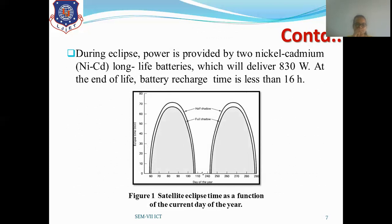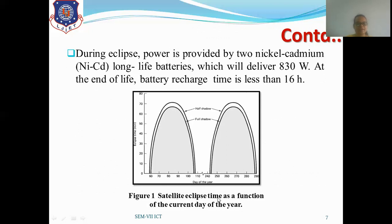As shown in the next figure for the HS 376 satellite, the y-axis shows eclipse time and the x-axis shows the day of the year. From approximately day 16 to day 100 there is full shadow, and there is also a half-shadow period. During the period from day 110 to day 240, the satellite experiences an eclipse. The satellite eclipse time is a function of the current day of the year, so each day has at least some eclipse time as shown in this figure.